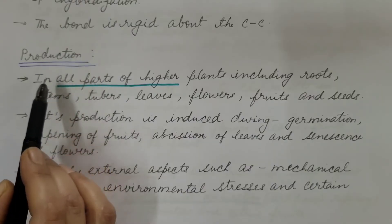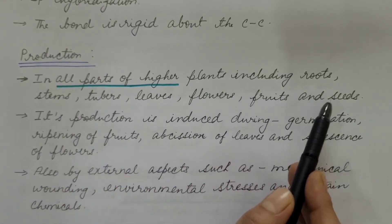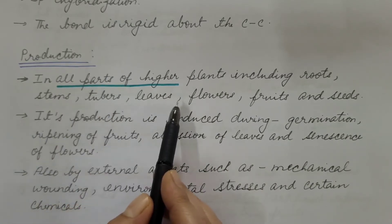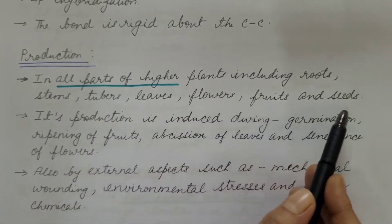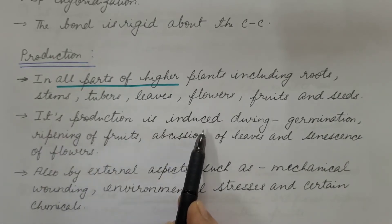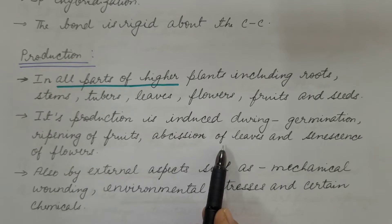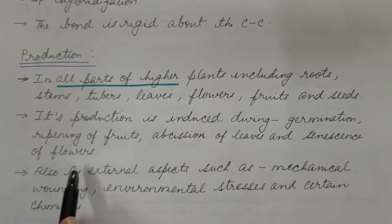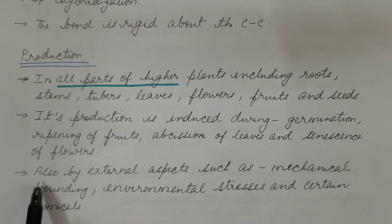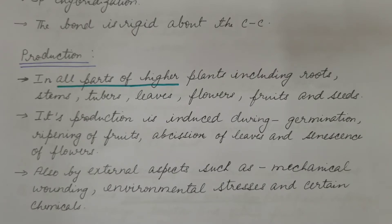Regarding its production: ethylene is produced in all parts of higher plants, including roots, stems, tubers, leaves, flowers, fruits, and seeds. Its production is induced during germination, ripening of fruits, abscission of leaves, and senescence of flowers. It is also produced in response to external factors such as mechanical wounding, environmental stresses, and certain chemicals.